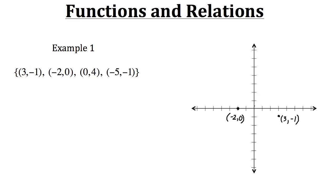Now let's do (0, 4). The input of zero keeps us right here, and then we go up four — there's our ordered pair (0, 4). For our last point in the relation we have (-5, -1), so we start with the input and go negative five, then go negative one on the vertical axis, so that's about right here — (-5, -1).